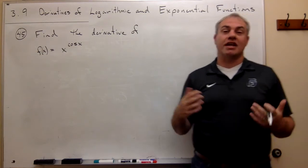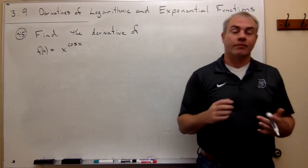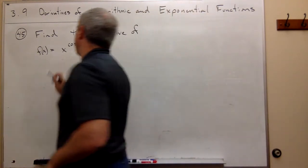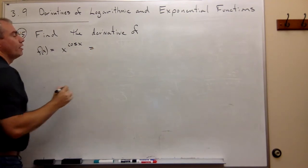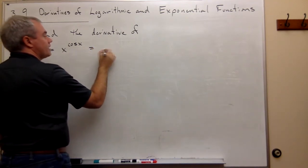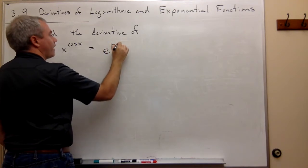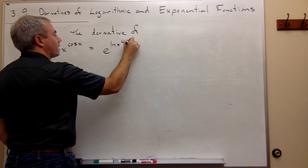You can't use the power rule, and you can't really treat it as an exponential function. It's its own thing. So what we're going to do is we're going to be very clever, and we're going to rewrite this thing. So I'm going to rewrite it this way. I'm going to say that this is e to the ln of x to the cosine of x.